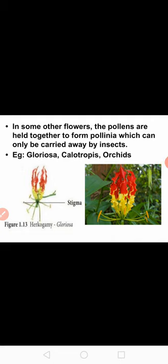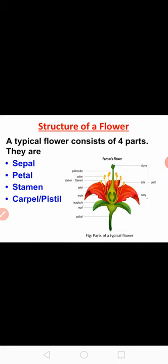These are all the contrivances for cross pollination. Next we will move on to the new topic, that is structure of a flower. A typical flower consists of four parts: sepal, petal, stamen and carpel. Of these four parts, sepal and petals are referred to as accessory organs or non-essential organs, whereas stamen and carpel are referred to as reproductive organs.